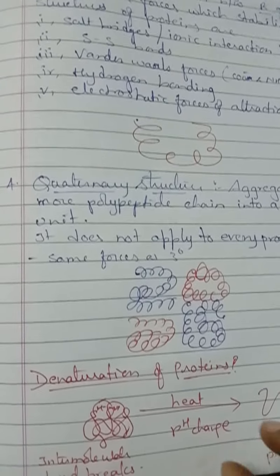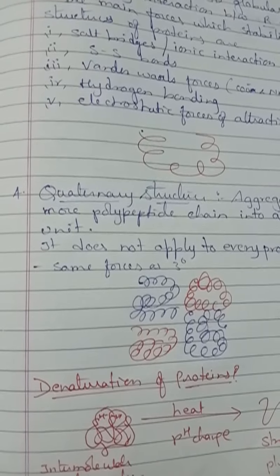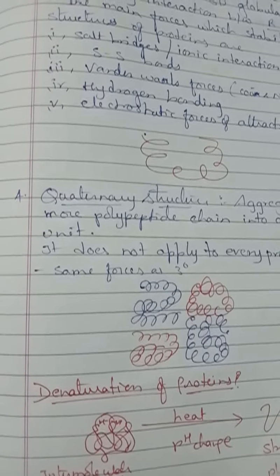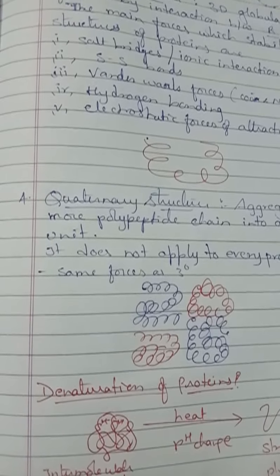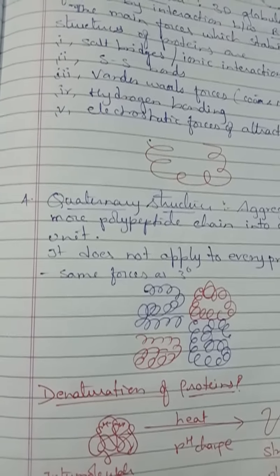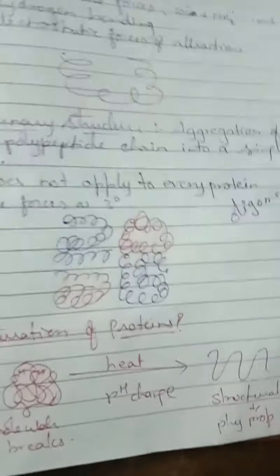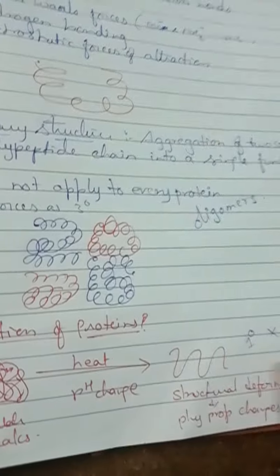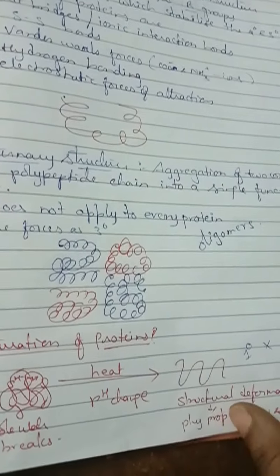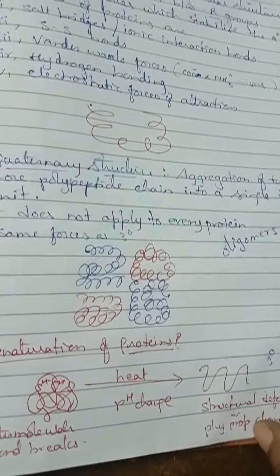Proteins undergo denaturation most readily at their isoelectric point. During denaturation, secondary and tertiary structures are destroyed, but the primary structure will not be destroyed. Remember: denaturation does not affect the primary structure — only secondary and tertiary structures are destroyed.